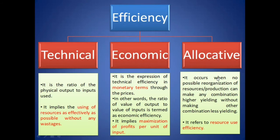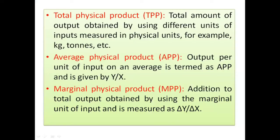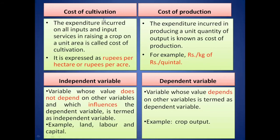Allocative efficiency occurs when no possible reorganization of resources can make any combination higher yielding without making another combination less yielding. It refers to resource use efficiency — your allocation method is the best and most efficient among all alternatives. If no other combination can be more efficient than yours, you are allocatively efficient.